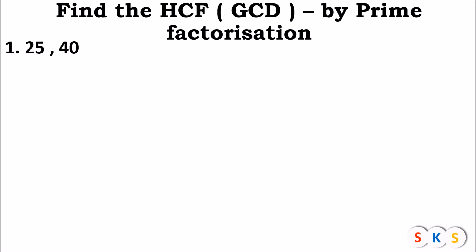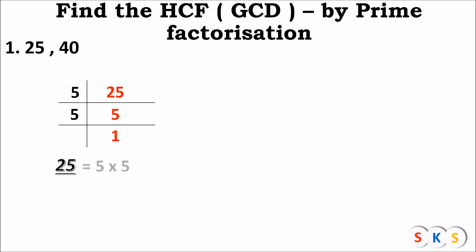Question 1: Find SCF of 25 and 40. First, we will find prime factors of each number. The first number is 25. A prime number has exactly two factors — numbers like 2, 3, 5, 7, 11, 13, 17. We will divide 25 by 5, and 5 is prime. So the prime factor of 25 is 5 × 5.